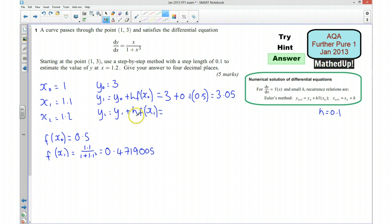Now for this here, for y1, sorry, for y2, I would do y1, which we've worked out to be 3.05, plus 0.1 times by this function here, and with x1 put in, so it's going to be that one there. So that's 0.4719005. And if I plug that into my calculator, I get 3.097 to four decimal places.